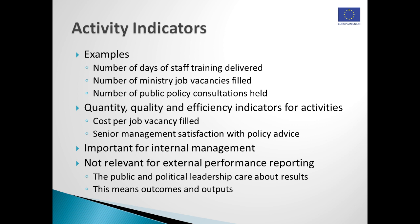These three examples are all indicators of the quantity of activities carried out. Just as with output performance indicators, it's possible also to have quality and efficiency indicators for activities. The cost per job vacancy filled would, for example, be an activity efficiency indicator. Similarly, if you were to systematically survey ministry senior management to find out how satisfied they are with the policy advice being offered to them by their staff, that would constitute an indicator of activity quality.